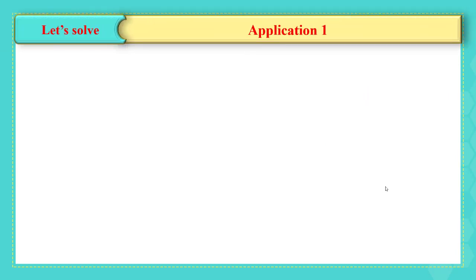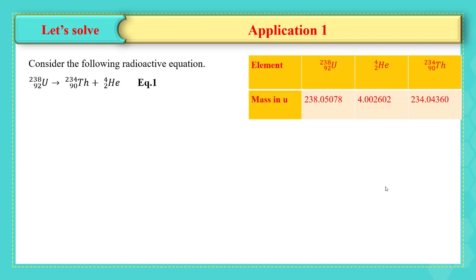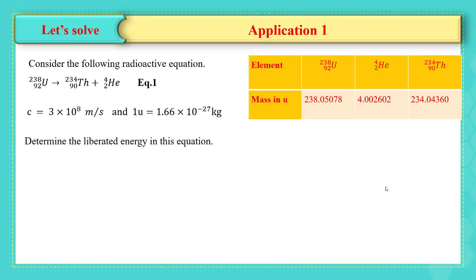Let's practice on how to determine the mass defect and the liberated energy. In this application, a uranium-238 decays into thorium and helium. Given the mass of each element, and how to convert from u to kilogram, we have to determine the liberated energy. Since the liberated energy is related to the mass defect, we should first calculate the mass defect, which is defined as the difference in masses between the reactant and the product. So we subtract the mass of uranium from the mass of both thorium and helium.